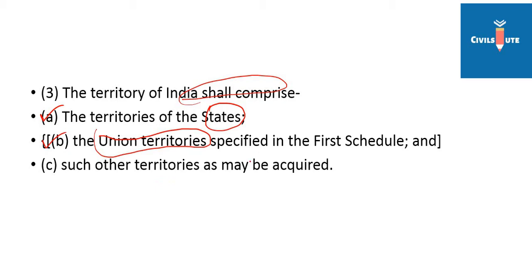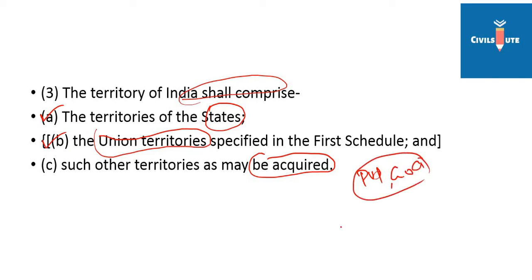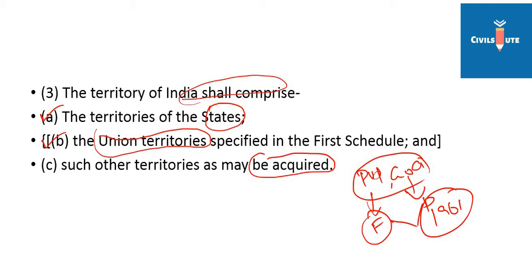The territories that may be acquired are also included. For example, Puducherry and Goa — these two gained Indian freedom. Goa was under Portugal and Puducherry was under France. These were published and approved in 1961, and India was approved for acquiring these territories.